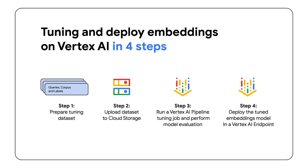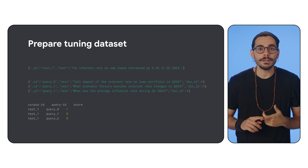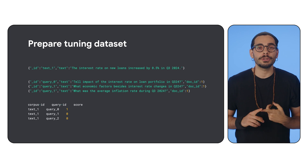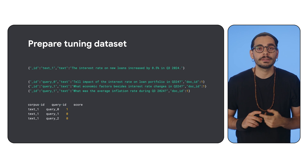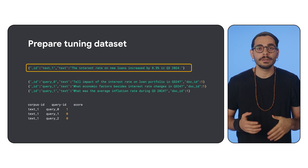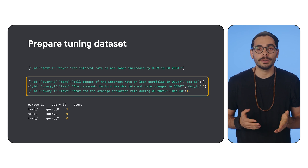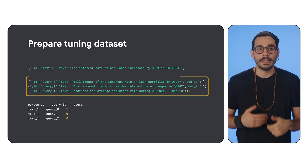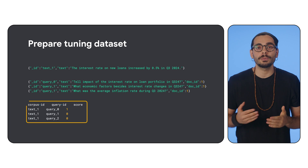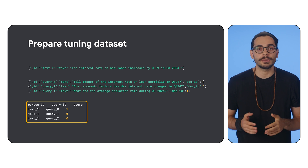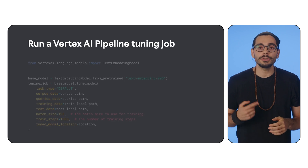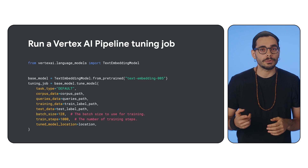You can tune and deploy embeddings on Vertex AI in four steps. First, you prepare your tuning dataset — queries, relevant document chunks, and their association with relevance scores. Next, you upload your dataset to Cloud Storage.